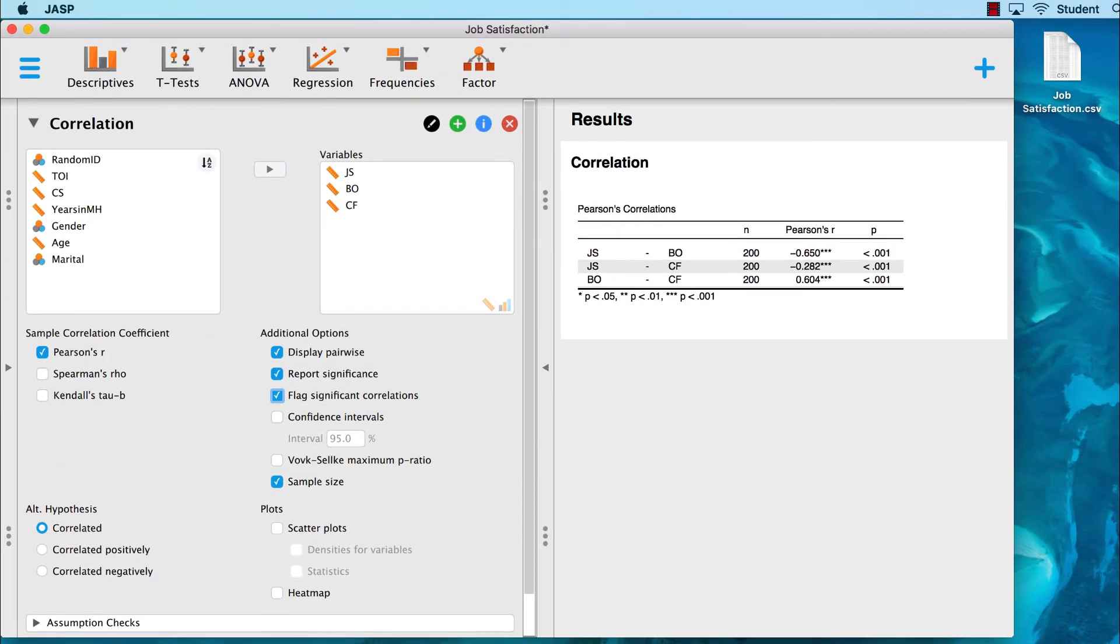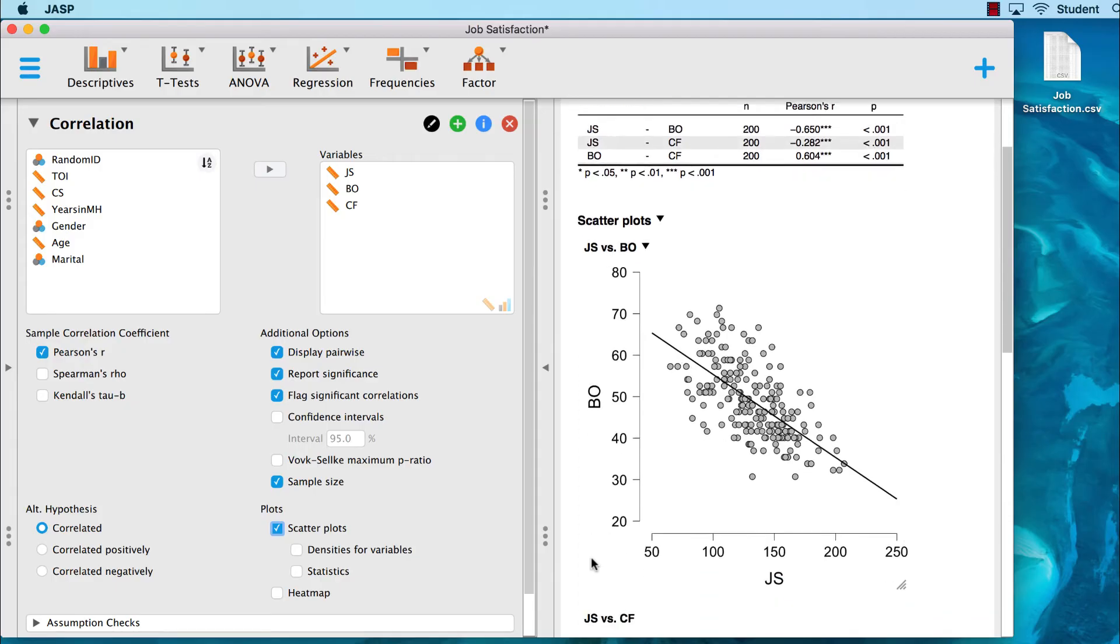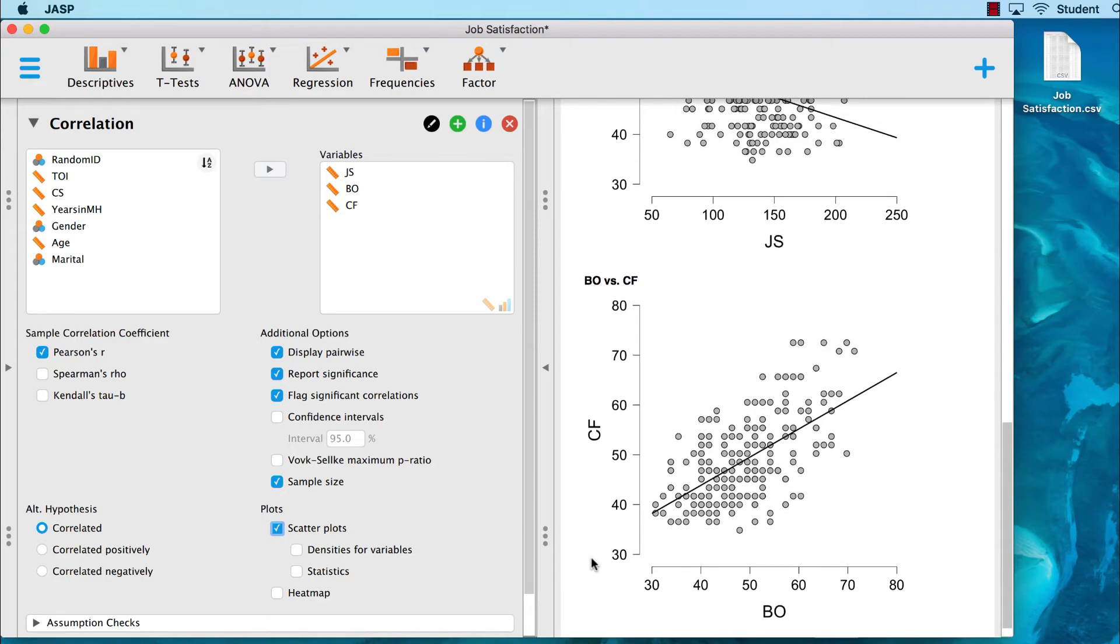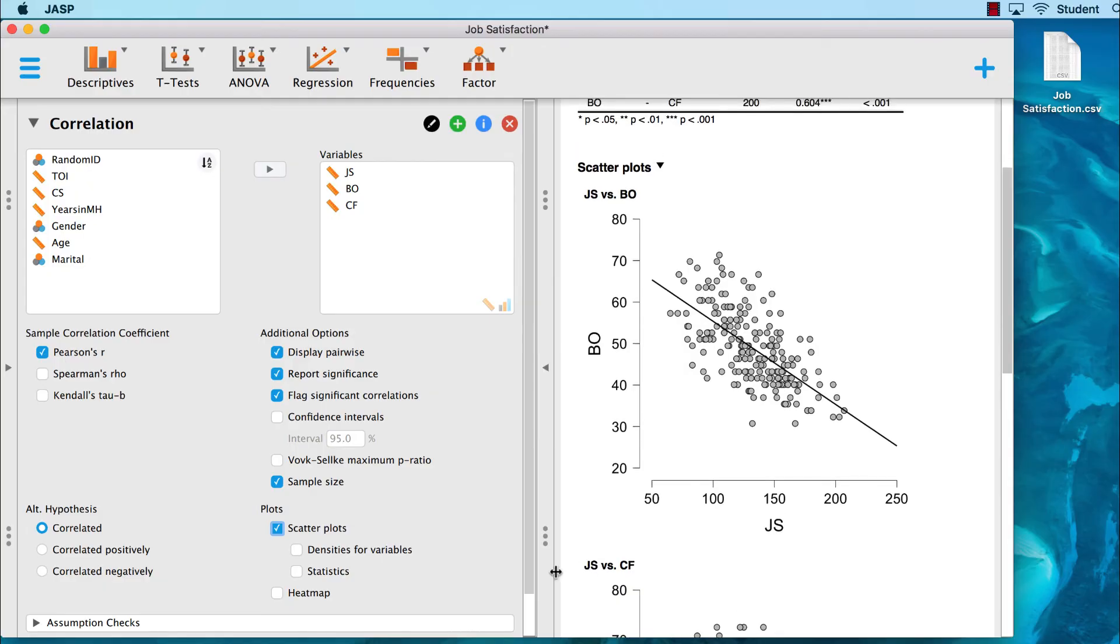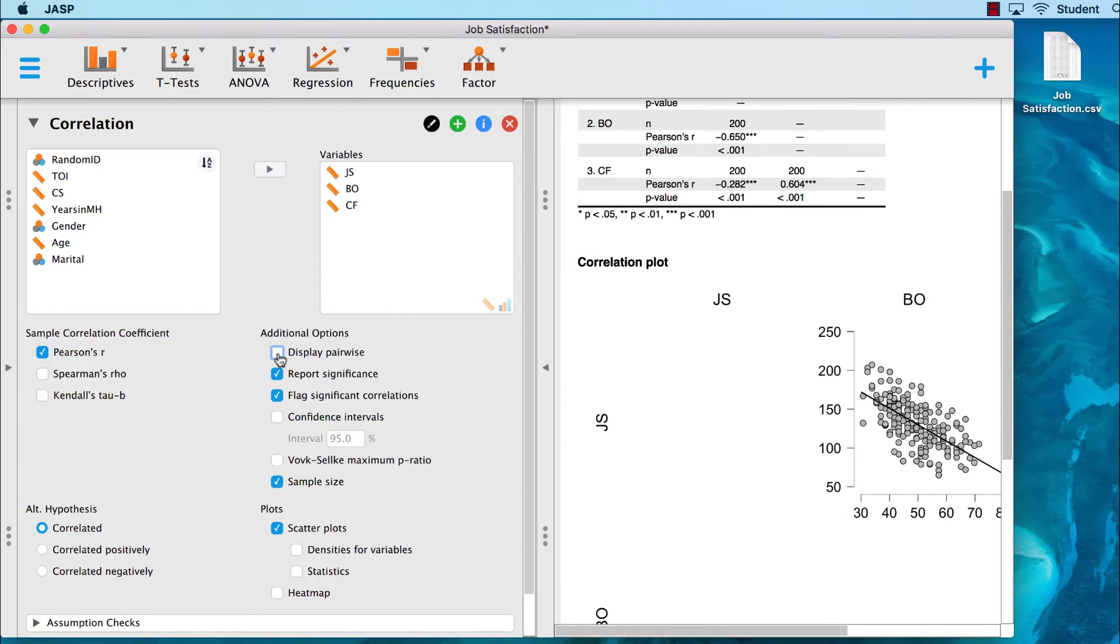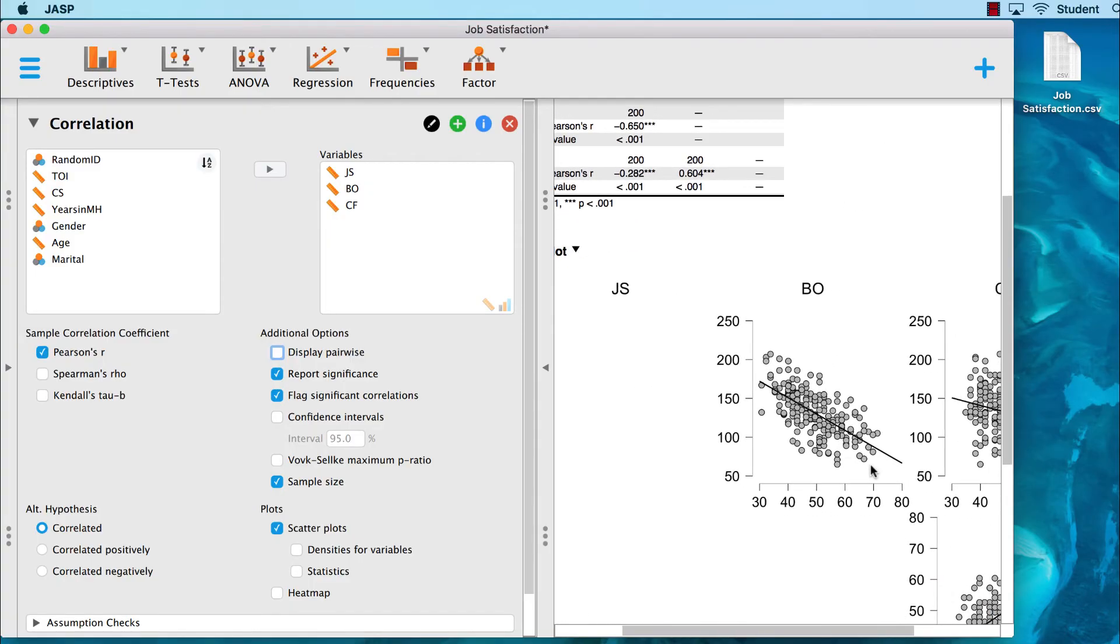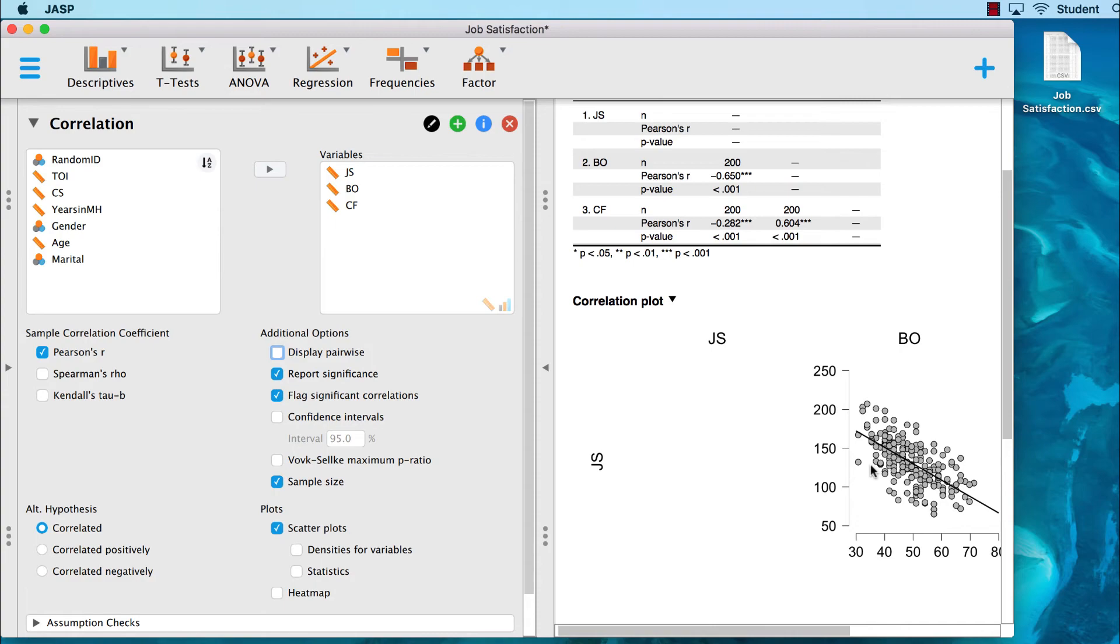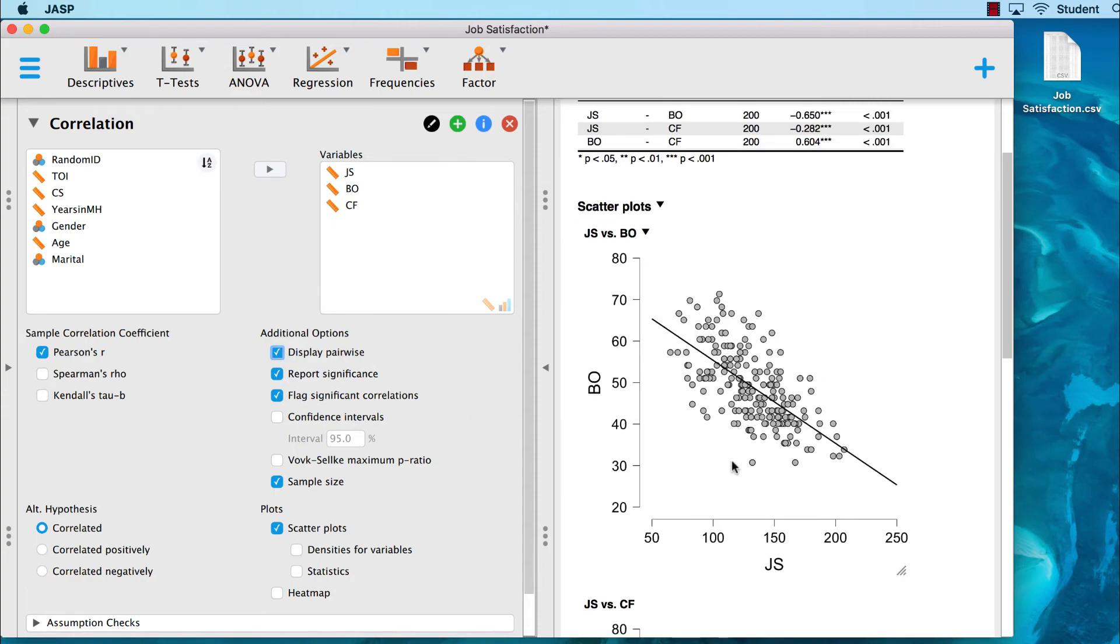But you know what we need? We need some visuals. Let's get some scatter plots by clicking on scatter plots under plots. Nice plots, right? Remember that one of the features of JASP is progressive disclosure. You can click on other options to see what they do, and then unclick them. Nothing that you click will mess up your analysis. And this is a really good way to learn about the features in the software. For example, untick the display pairwise option. The scatter plots now change to a matrix. I don't care for this display. I like the separate plots. So I would tick display pairwise, and I would be able to see the plots separately.